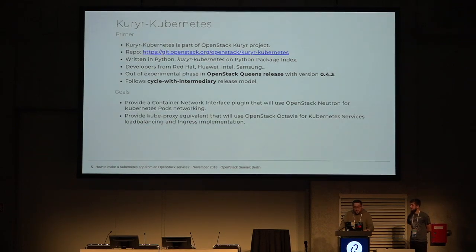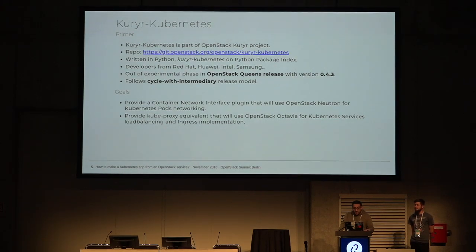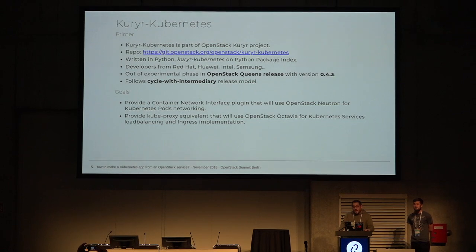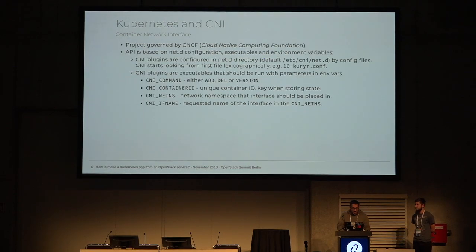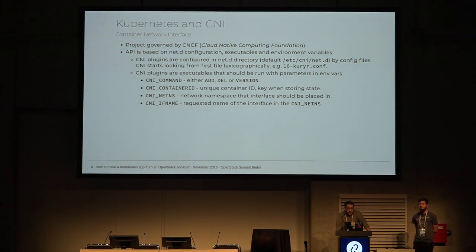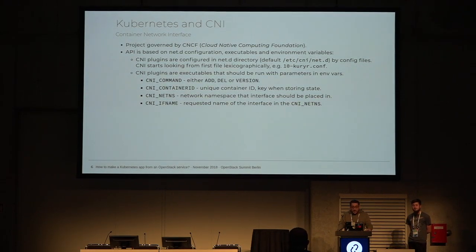Our goal is to provide a container network interface plugin that would use OpenStack Neutron for Kubernetes networking. We would also like to have a service equivalent to kube-proxy using OpenStack native services such as Octavia, or in the past using Neutron LBaaS. Let me tell a little bit about what CNI is. CNI is, of course, a container network interface, and it's meant to provide you with a networking plugin for Kubernetes. It was originally a project coordinated by the CNCF, the Cloud Native Computing Foundation.